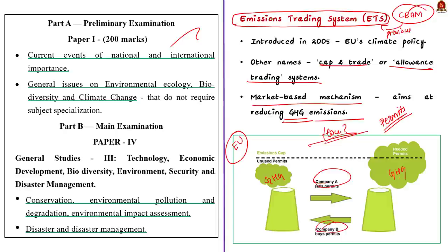Under the ETS, both companies A and B will get some emission permits, meaning they are not allowed to emit greenhouse gases more than what is provided in the permits. Through this mechanism, the EU tries to cap greenhouse gas emissions. But when a company emits more than the permit, carbon trade comes into picture. If company A emits less than its permit but company B exceeds it, company A can sell its remaining permit to company B. This way, the EU can still cap emissions by allowing companies to buy and sell permits among themselves.